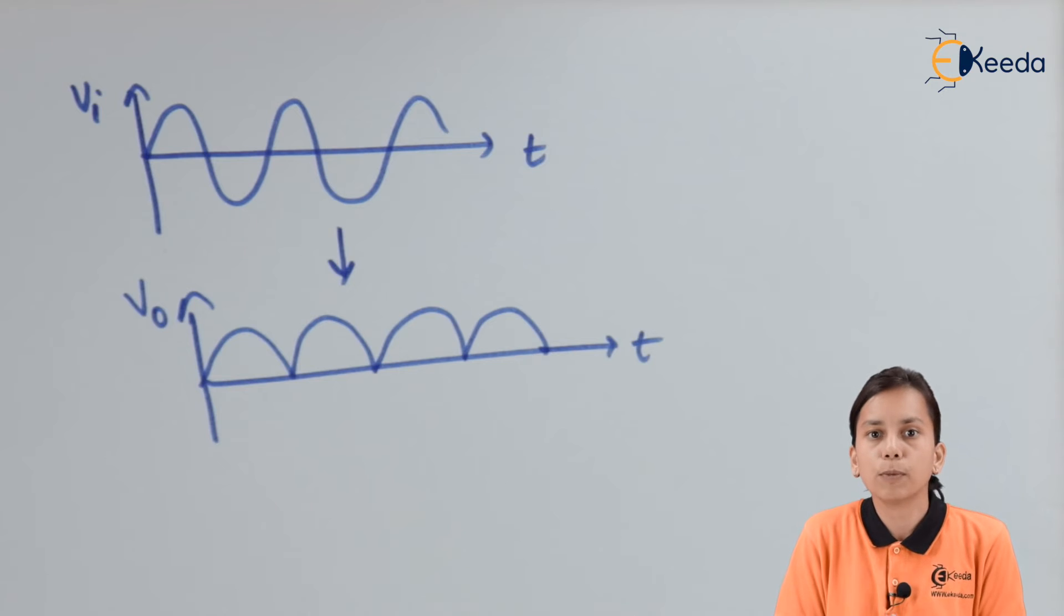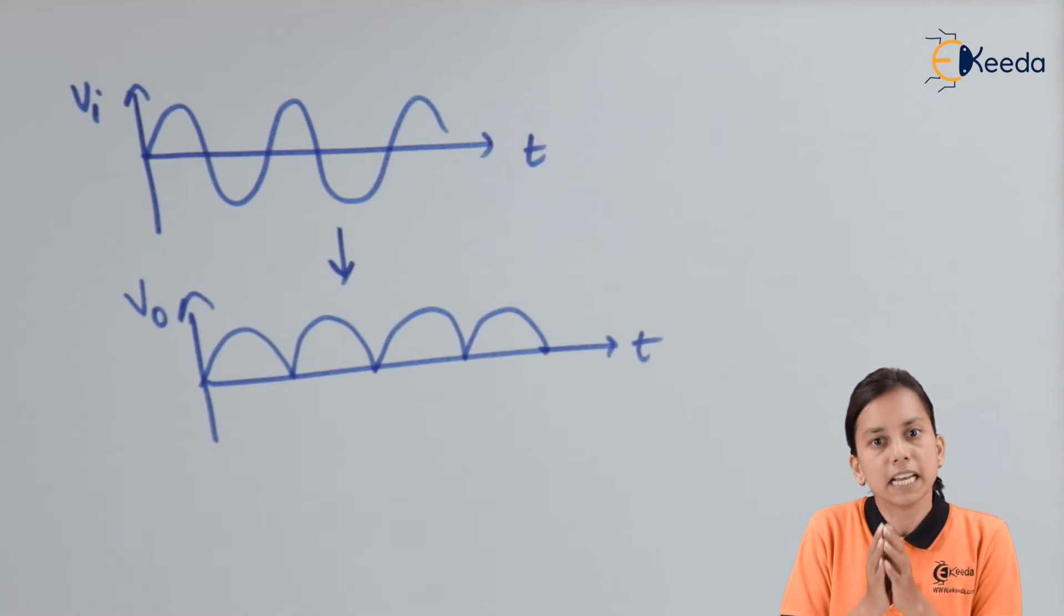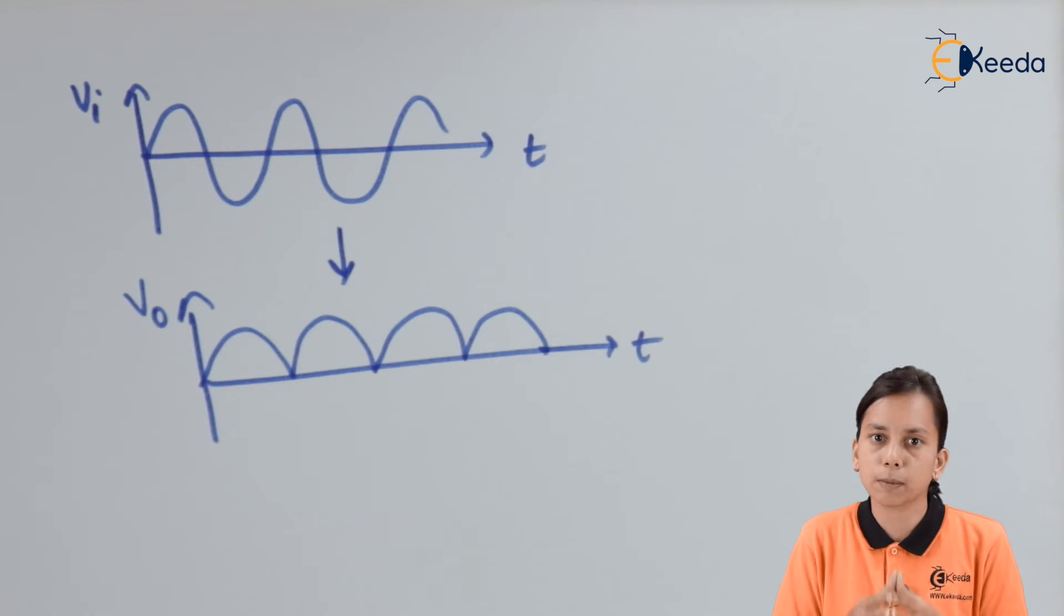Now filter can be divided on the basis of the type of element we are using in our circuit. If I am using capacitor in the circuit then that kind of filter is known as capacitor filter. If I am using inductor in the circuit then that kind of filter is known as inductor filter. Let us first look at the construction of the capacitor filter.